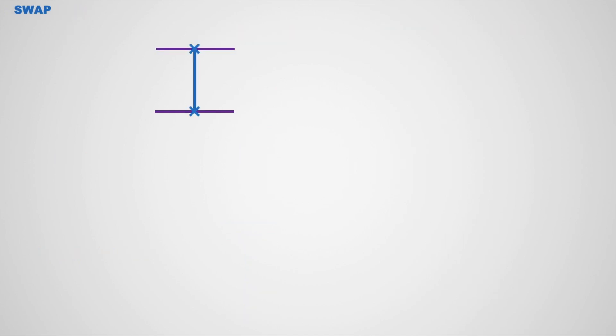This is a 2-qubit swap gate where the data of 2 qubits is swapping between them. If the input of a swap gate is |0⟩ and |1⟩, then the data swaps between these 2 qubits.